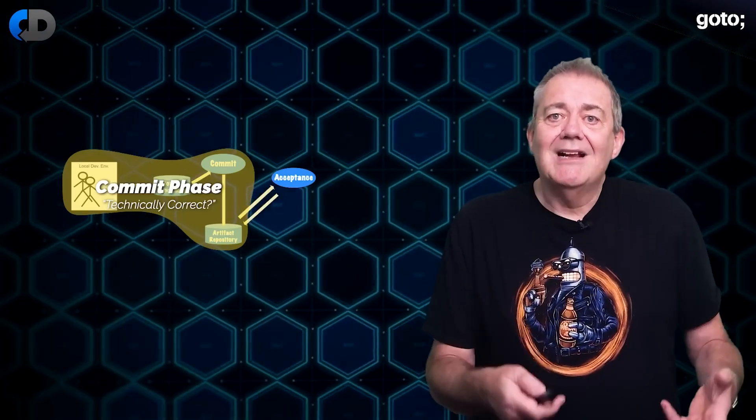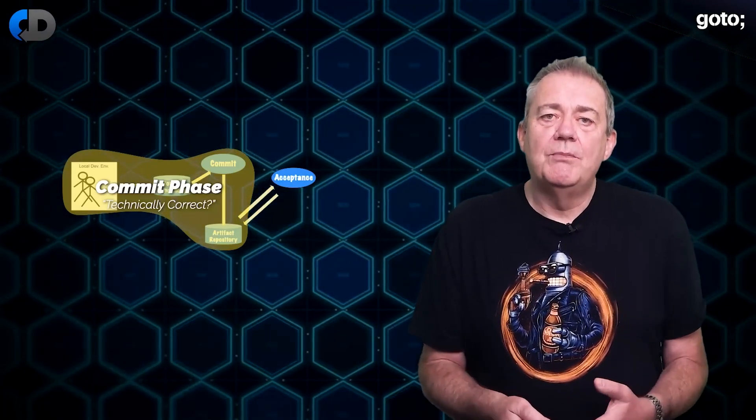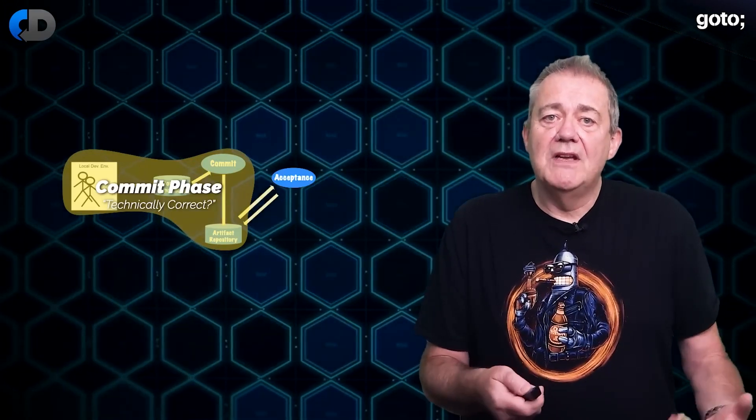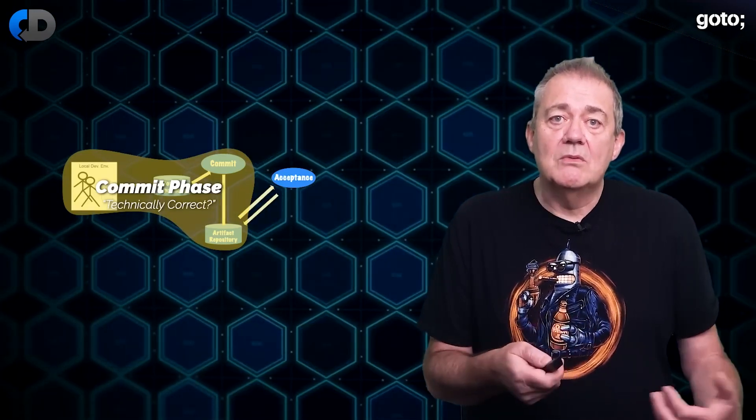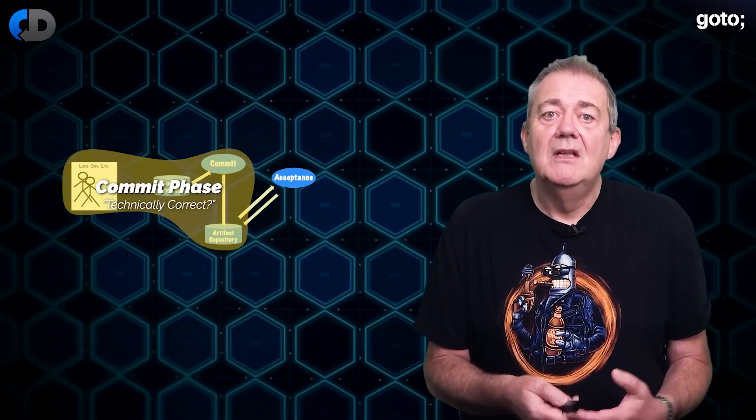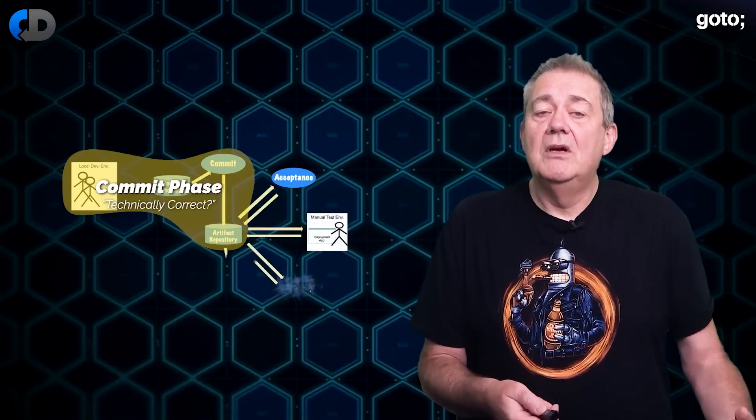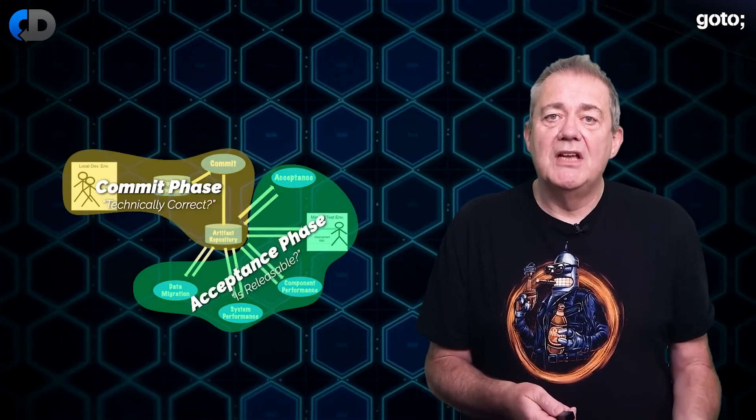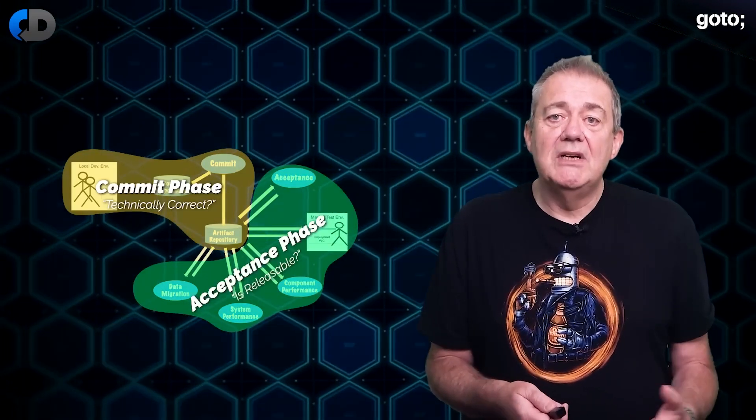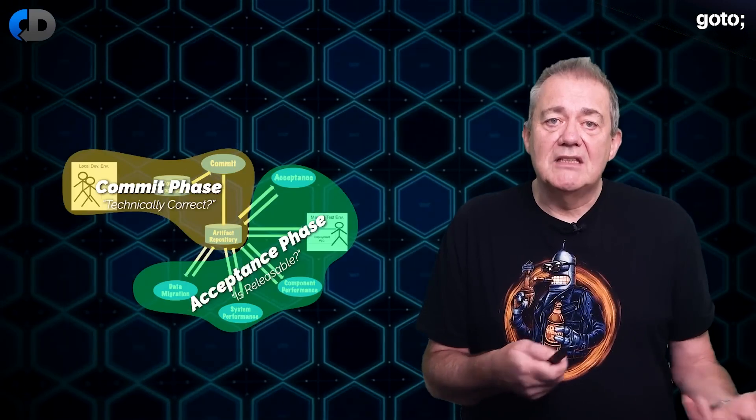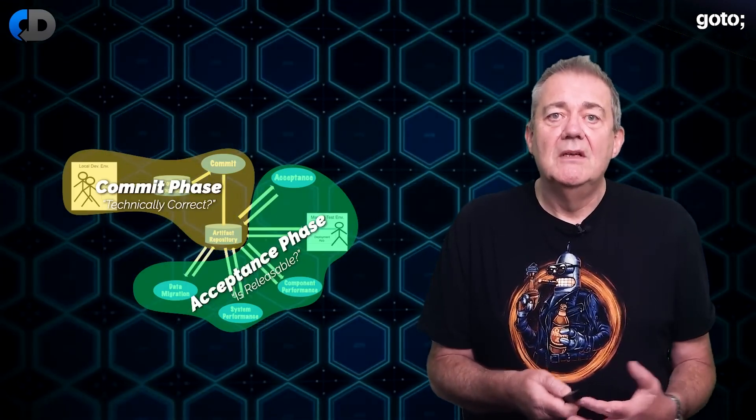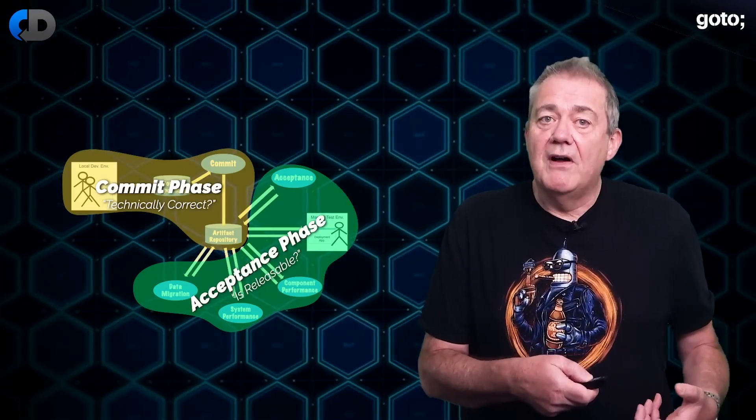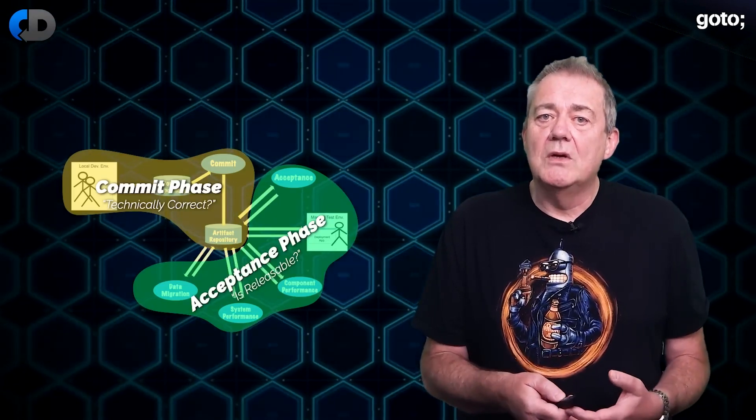Once these commit tests pass then the next thing we want to know is is my software deployable. So we deploy exactly the code that we plan to deploy into production into an acceptance test environment using the same tools to configure and deploy it as we will use when we deploy into production. So if this all works we know that it's going to work when we deploy to production too. Next we want to know if our change is releasable so we check everything that determines the releasability of our system during the acceptance testing phase. We can use the executable specifications that we created at the start to verify that our code does what our users want it to do.